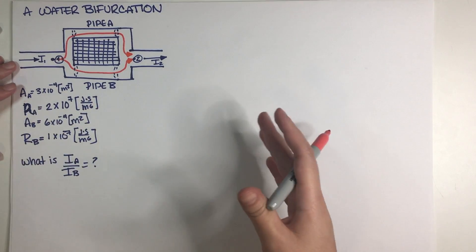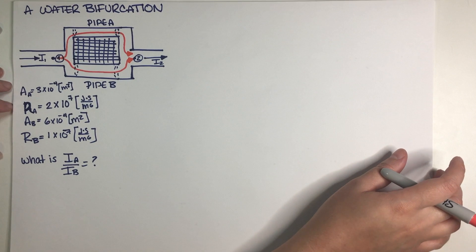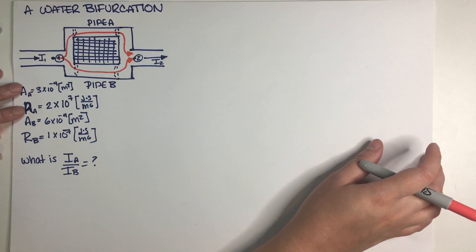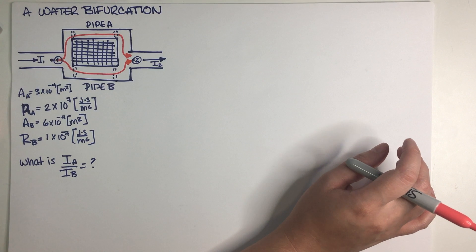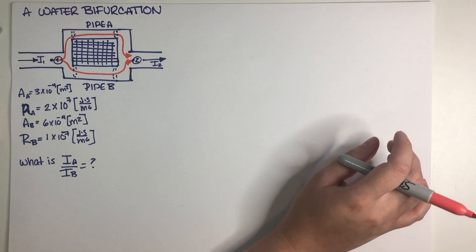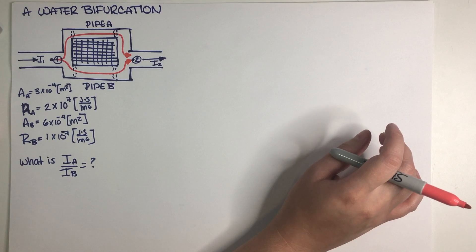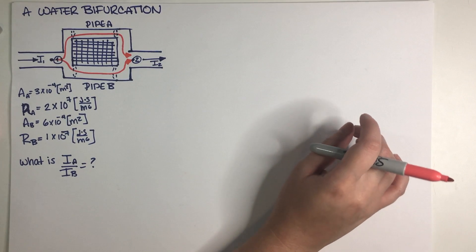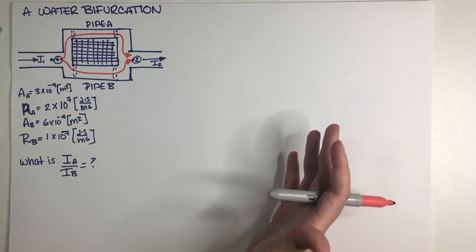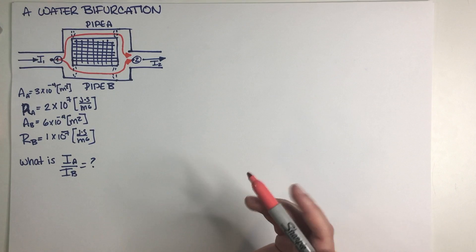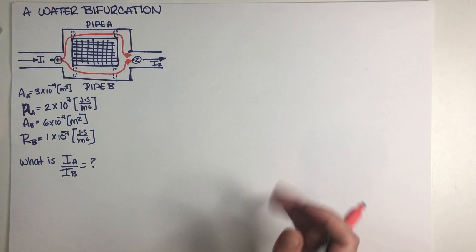In the 7-series, you always want to be sure that you can use physics to defend or justify your answer. Just saying it's 50-50, therefore the ratio equals one, is not going to work. Let's go ahead and see what will work.